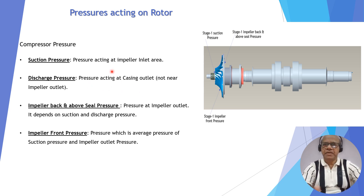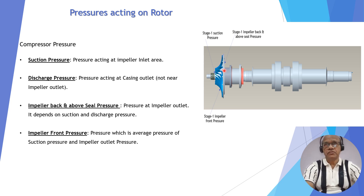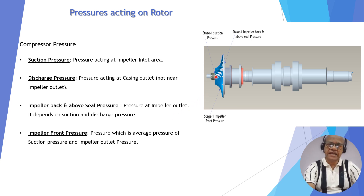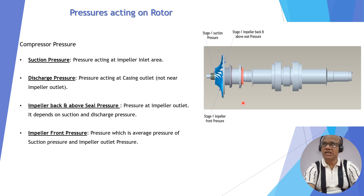Once the impeller geometry is fixed, its dimensions are also fixed — there is no change in geometry, no change in dimension. So there will only be a change in pressure. Force is the product of area multiplied by pressure. Since area is not going to change, the only variable is pressure. The pressures acting on the rotor are: suction pressure acting on the impeller inlet portion, compressor discharge pressure at the casing outlet — not the impeller outlet — and the impeller back pressure above the wheel seal.